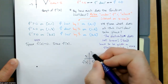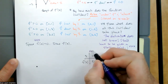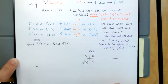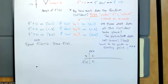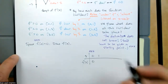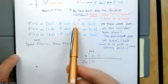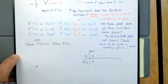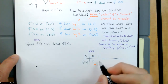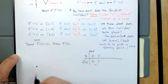Once again, this is given information. On the interval from 0 to 1, we know that the function increases by one. So f of 1 is equal to one.